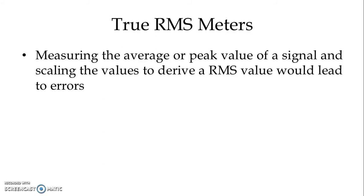Measuring the average or peak value of a signal and scaling the values to derive an RMS value would lead to errors. In a normal RMS meter we are measuring either the average value or peak value and then it is converted into RMS value, and the meter indicates the RMS value of the applied signal.